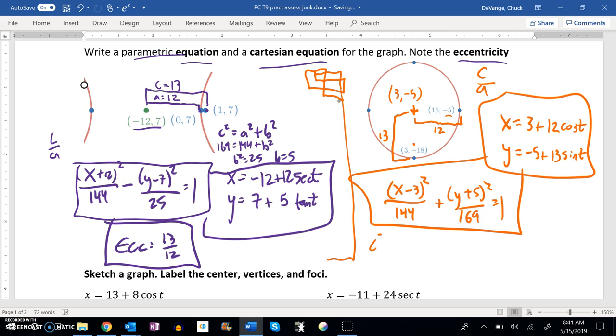So I know that c squared is a squared minus b squared in an ellipse, because it's the opposite operator of that. So that means that c squared would be 169 minus 144, which is 25.